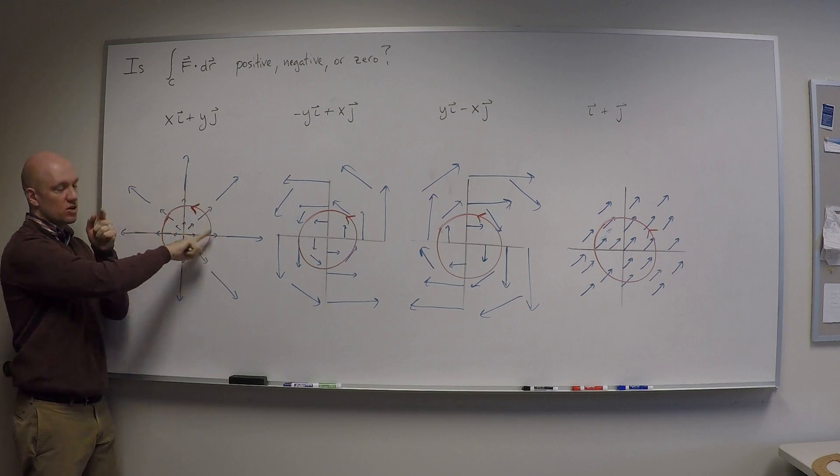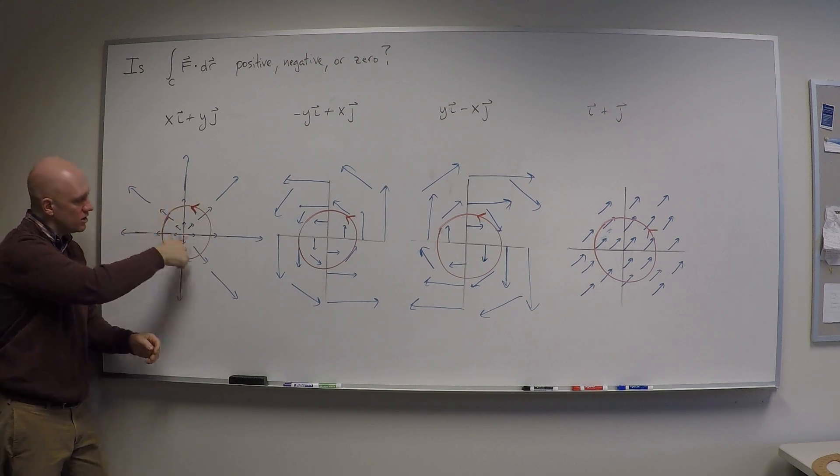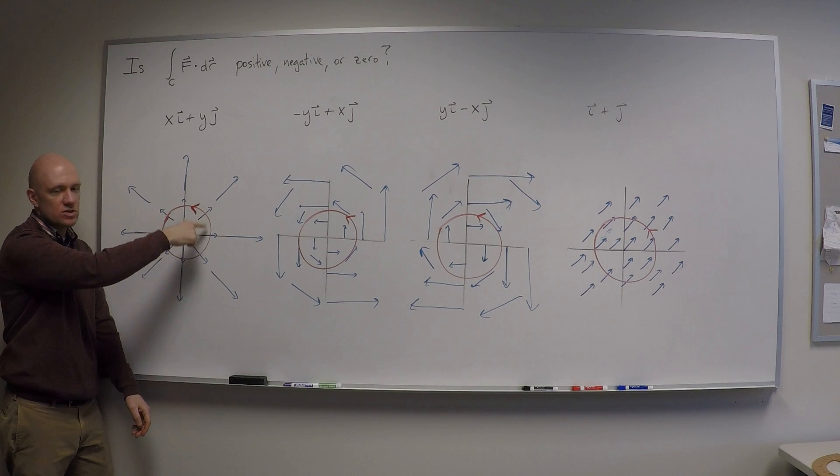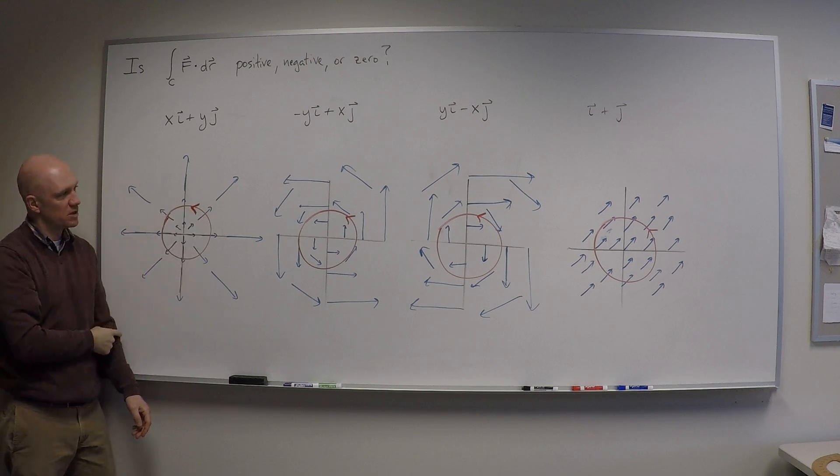I'm always moving straight across the vector, and so nowhere in this path am I either fighting against or going with the vector field, so the total result is zero. The vectors are always perpendicular to the path.